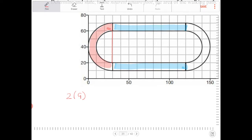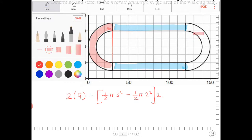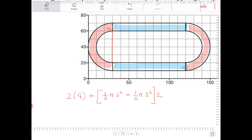So the big semicircle is going to be one-half of π times r squared times 3 squared. That's the big semicircle. And then the small semicircle is one-half π times 2 squared. And we're going to have to double this because we have the same semicircles on both sides, right?